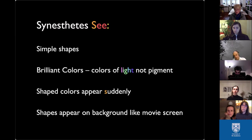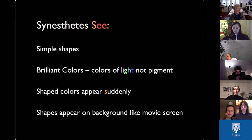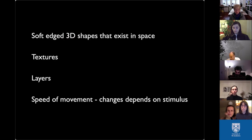What do synesthetes see? In simple terms, the shapes we see are blobby, simple, not figurative. The colors we see are the colors of light — much brighter than pigment, like what you see on a computer screen. We see shaped colors that appear suddenly and move on a background, kind of like watching a movie. We see soft-edged 3D shapes that exist in space but do not cast shadows. They have textures and occur in layers, and how fast they move depends on what's triggering the seeing of them.